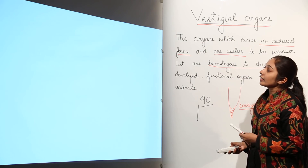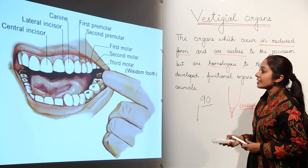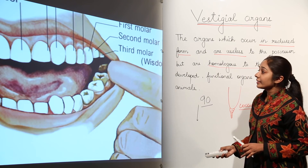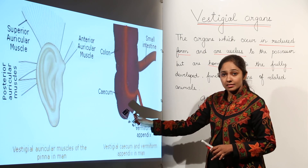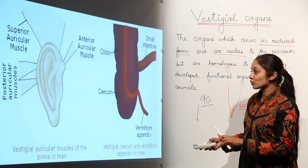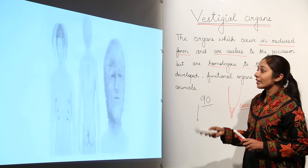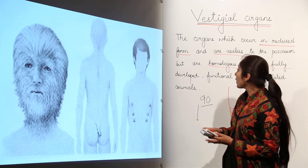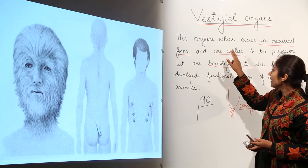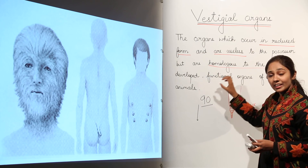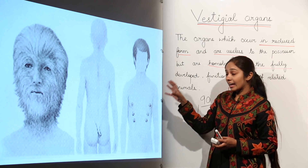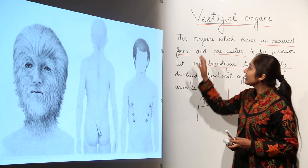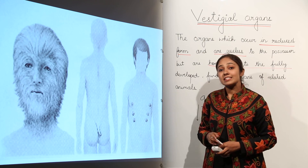Remember what we have discussed: the first is the appendix, second is the wisdom tooth, then we have auricular muscles which are now useless and in reduced form, and then we have hairs on the body, tailbone, and extra hair on the body. All these organs are vestigial organs because they occur in reduced form, they are useless, and they convey that our ancestors had them with some function. But now they are functionless — that is why all these are examples of vestigial organs.